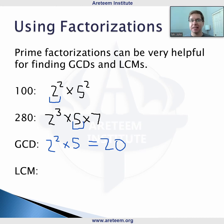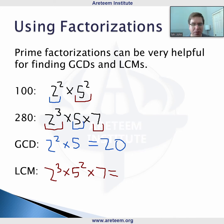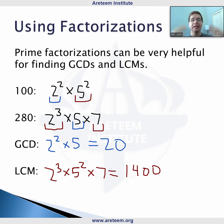For the LCM, we take the larger of the powers, since it needs to be a multiple of both numbers. It needs to be divisible by 8 from that 2 cubed, so 2 cubed shows up in the LCM. It needs to be divisible by 25, so times 5 squared. And of course we need to be divisible by that 7 as well. This gives us the prime factorization of the LCM quickly, and calculating it out gives us 1,400.